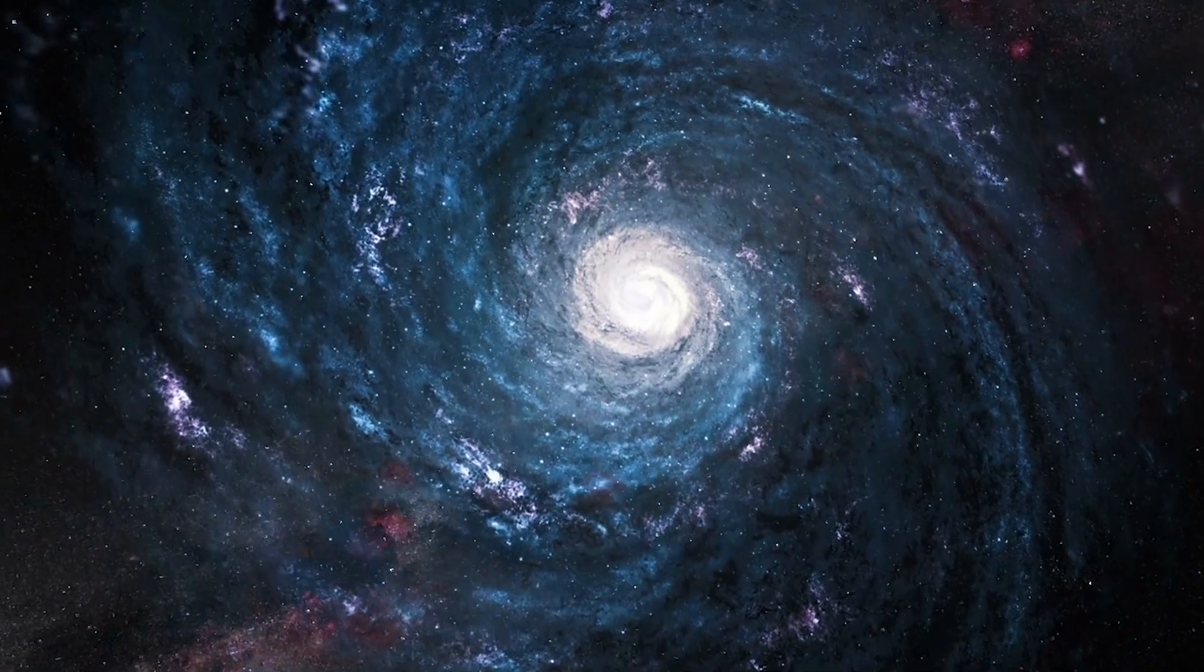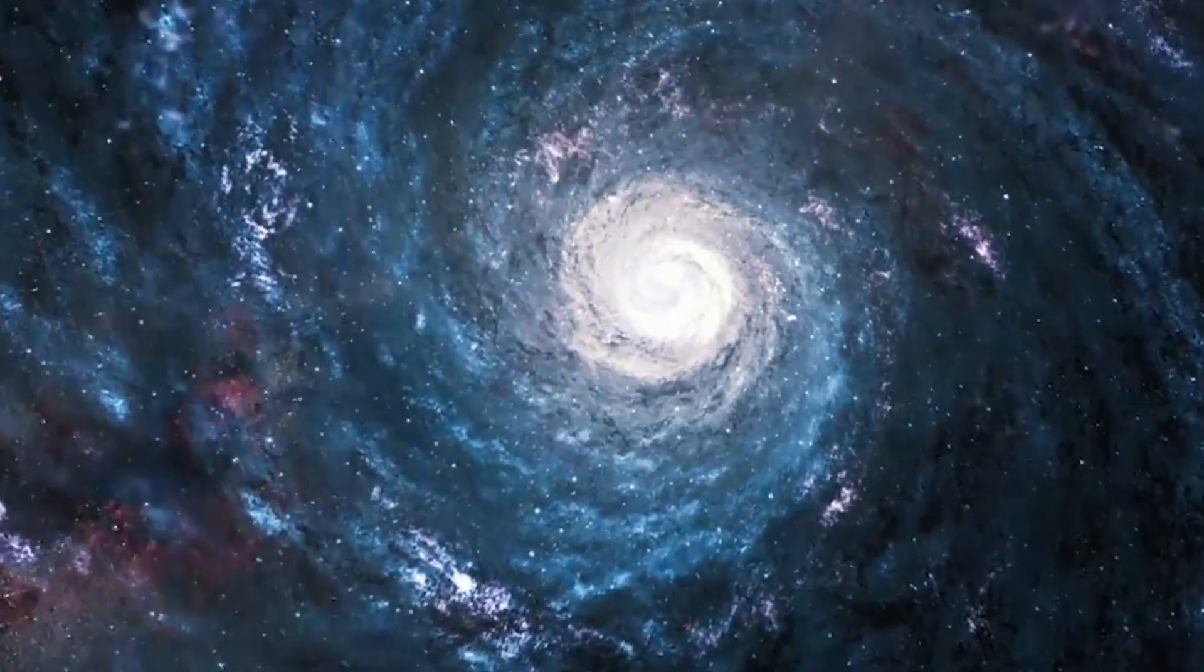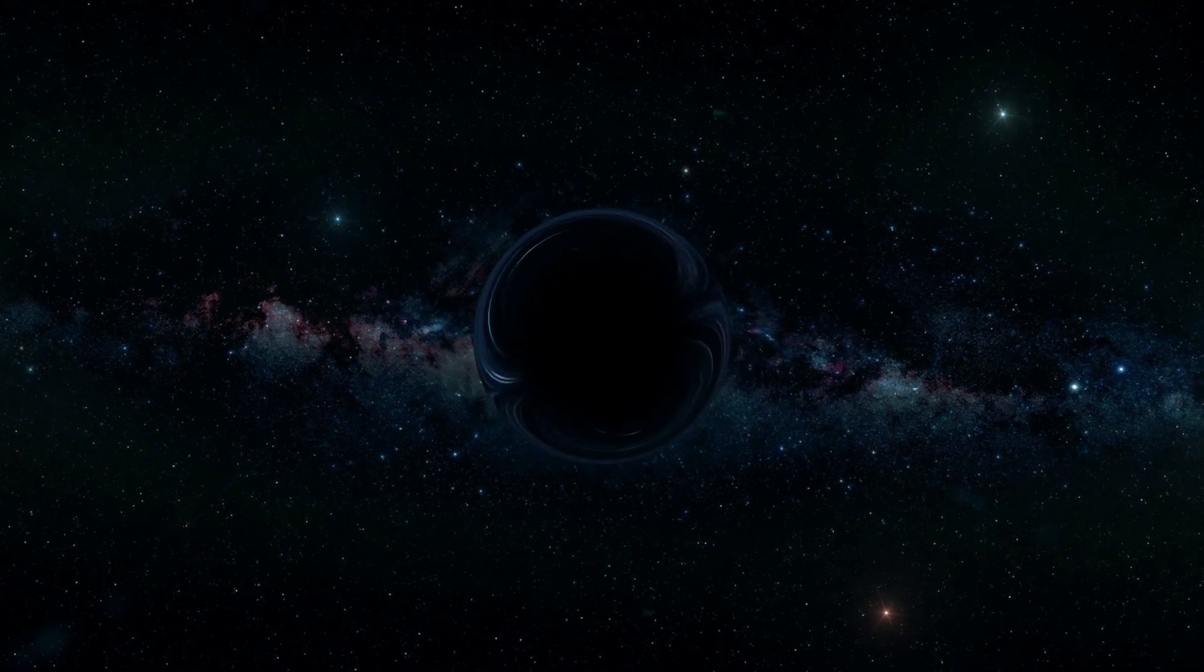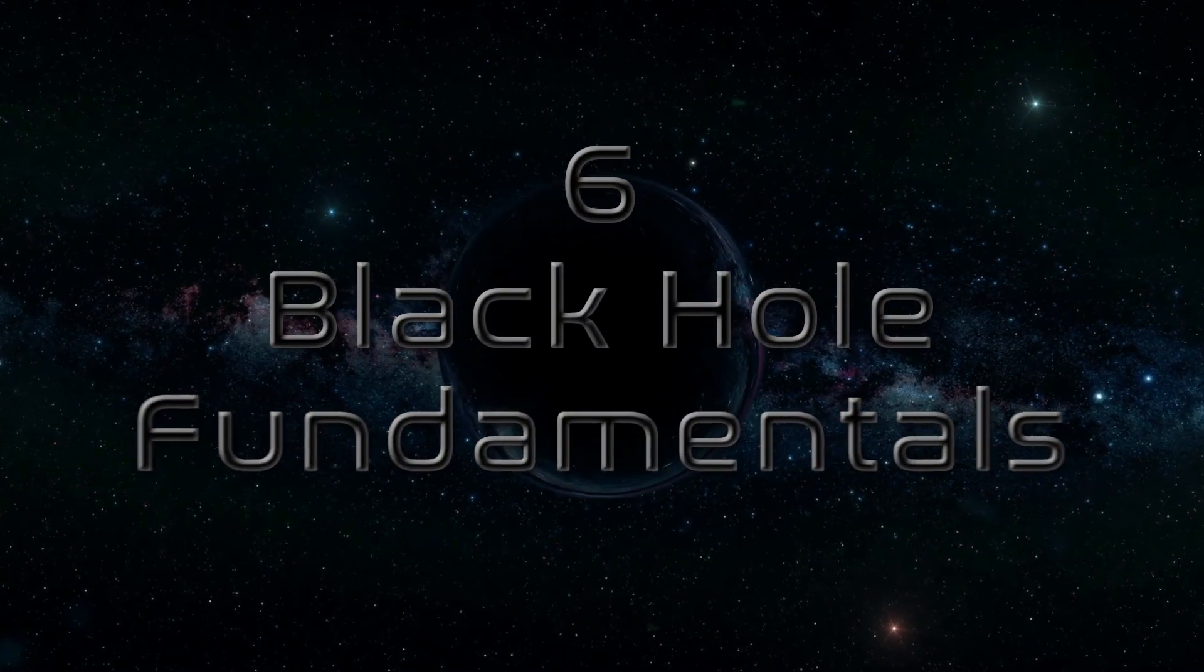Yes, even our Sun orbits something. Deep at the center of our galaxy, there's something so heavy that you literally can't see it, because all of the light fell into it. Today, we're going to take a look at the Six Black Hole Fundamentals.